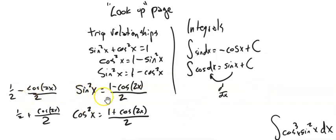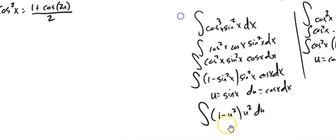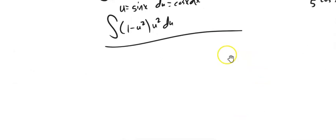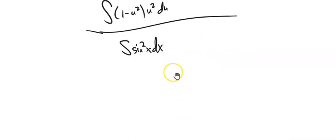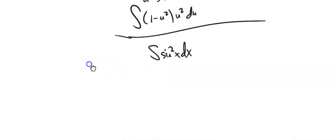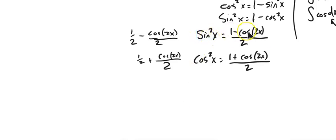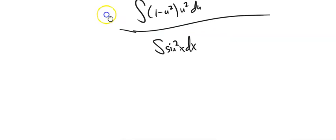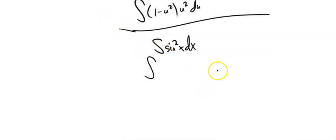We've got these tools to rewrite things. What if we just had sine squared? I could rewrite it with the Pythagorean identity, but that gives a cosine while losing my sine — I need both for substitution. The squaring is the issue. So I won't use that identity; instead I'll use the half-angle formula: sine squared equals one minus cos(2x) over two.